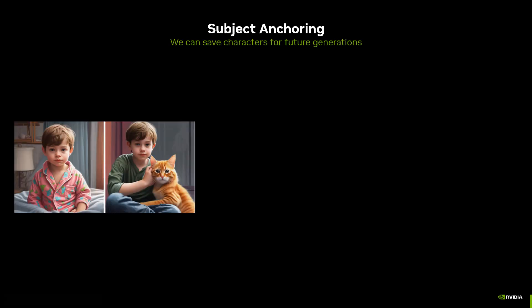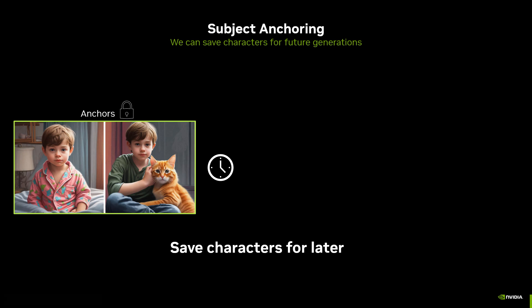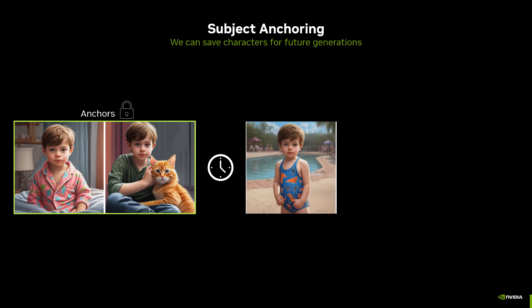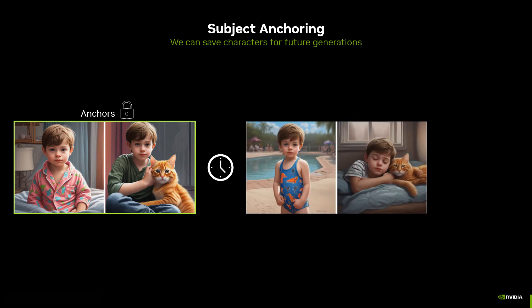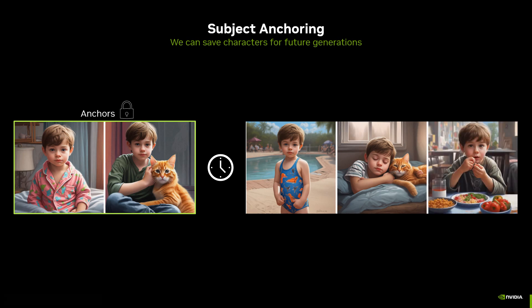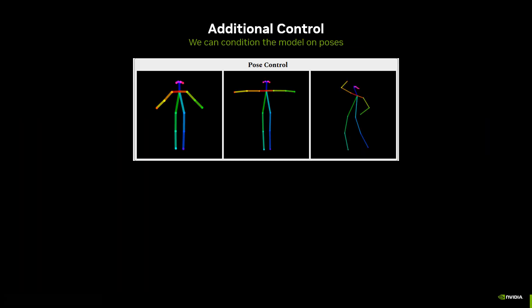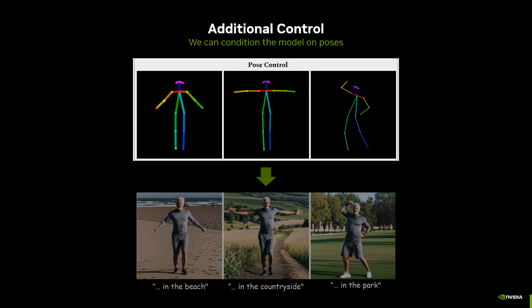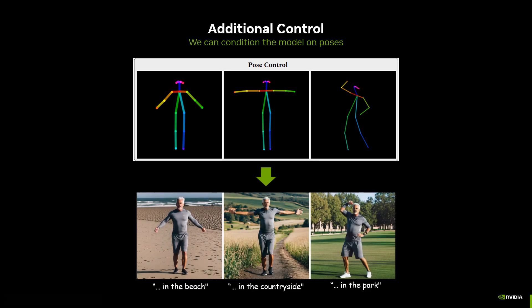We can also generate images of a character and save it for generating more images later. Finally, we can provide additional control such as the human pose, and generate a consistent character following these controls.